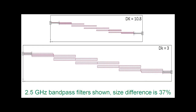Shown here is a comparison of two microstrip edge-coupled bandpass filters — a top view of both circuits. One filter uses a material with a dielectric constant of 3, and the other filter has the same response and function but uses a higher dielectric constant material of about 10.8. You can see pretty easily that there is a dramatic difference in size — about a 37% reduction in size with the higher-Dk substrate.